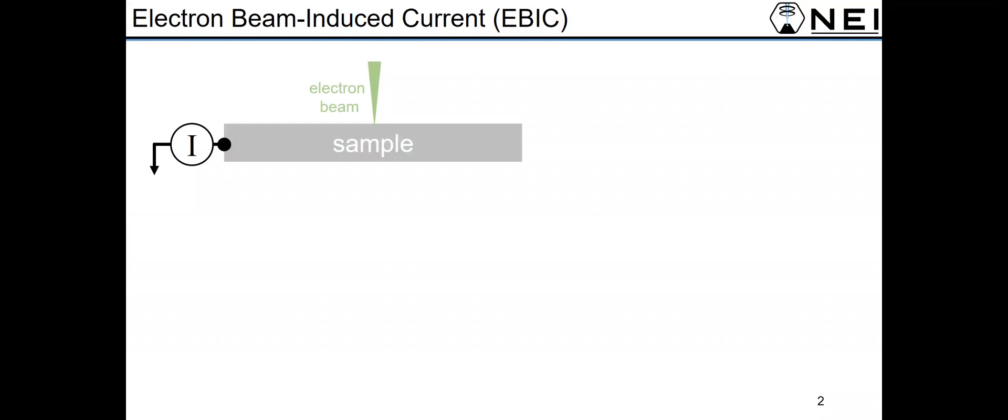So very generally, EBIC, which stands for electron beam induced current, is the measurement of current generated in a sample by an incident electron beam.